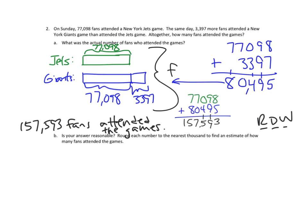But now let's look at the second part. Is your answer reasonable? Round each number to the nearest 1,000 to find an estimate of how many fans attended the game.